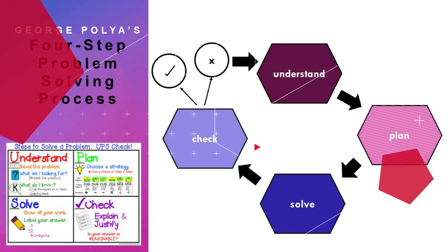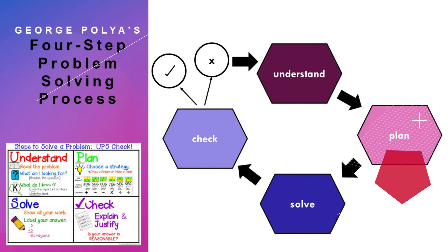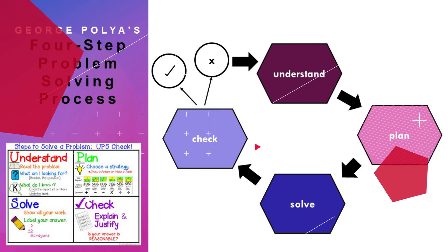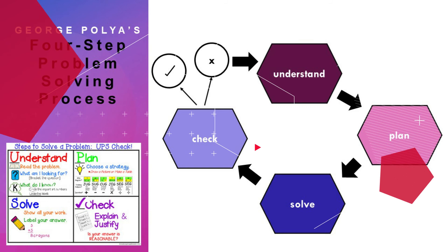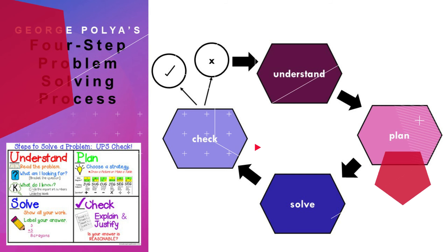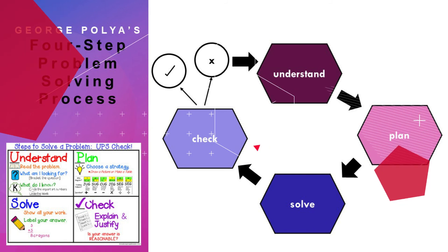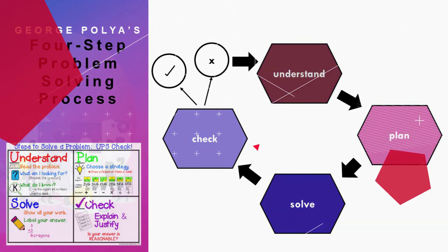Allow me to revisit this again. George Polya, a famous mathematician, wrote a classic book, How to Solve It, in 1945, that outlined four steps of doing mathematics. Teaching these four steps to learners can improve their ability to solve problems. What are these four steps?